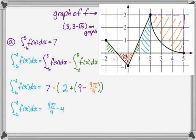After cleaning everything up, we end up with 9π over four minus four. Keep in mind that for this problem we actually evaluated the integral from negative two to five — ending up at 9π over four minus four — because we're going to need that later for another part.